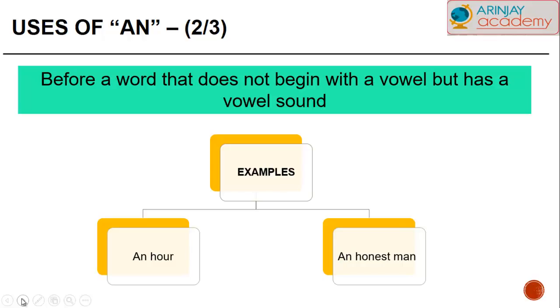AN is also used before a word that does not begin with the vowel letter but has a vowel sound. For example, an R, an honest man. Here the letter H is silent. Therefore, we have a vowel sound and we use AN before it.